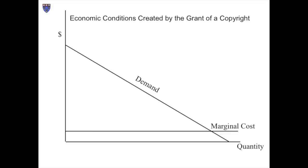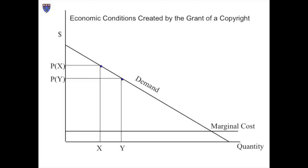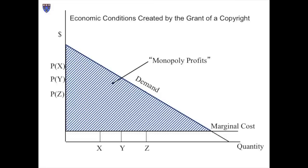If the managers enjoy protection against competition, how will they price the film? Well, if they have very good and detailed information concerning the ability and willingness to pay of every individual customer, plus the capacity to vary the price of the DVDs, then the managers will charge each customer the maximum amount that they can. If they know that X is able and willing to spend PX, they will charge that much; PY for Y; PZ for Z. The result is that they enjoy monopoly profits occupying the same area in the graph that, in the competitive model, was devoted to consumer surplus.